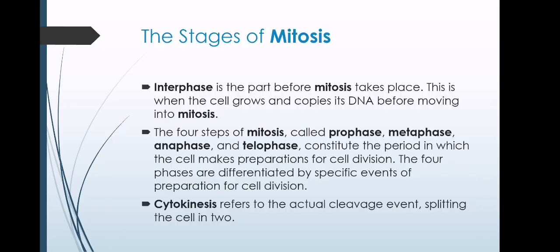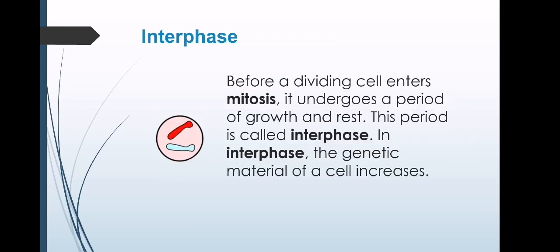Mitosis involves four key phases: prophase, metaphase, anaphase, and telophase. These phases occur in strict sequential order. Another phase is cytokinesis, which is a process of dividing the cell contents to make two new cells.